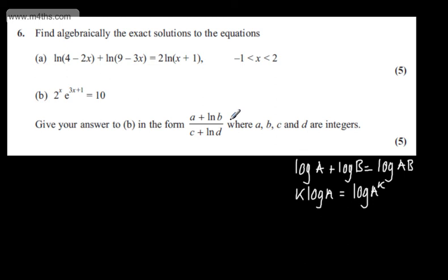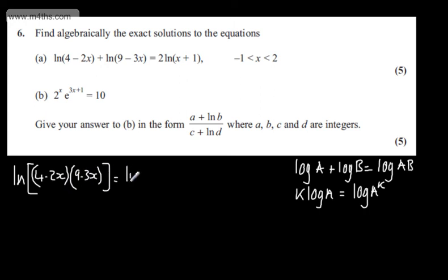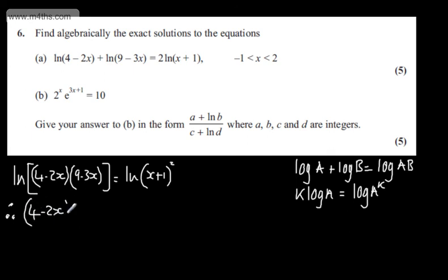I'm going to use both of these laws with this equation. I'm going to write this as the natural log of (4 minus 2x) multiplied by (9 minus 3x), equal to the natural log of (x plus 1) all squared — using the sum-to-product law on the left and the power law on the right. Therefore, 4 minus 2x multiplied by 9 minus 3x must equal (x plus 1) all squared.